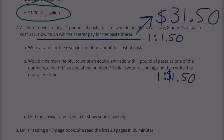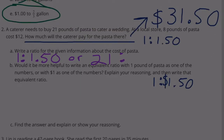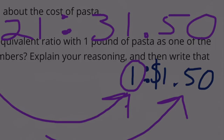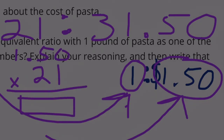Part A: write a ratio for the given information — 1 pound for $1.50, or 21 pounds for $31.50. Part B: would it be more helpful to write an equivalent ratio with 1 pound or $1.00 as one of the numbers? I think it's more helpful to write the pound as one so you could multiply the pound times any number. For example, if we needed 21 pounds of pasta, we'd multiply 21 times the price per pound — 21 times $1.50.